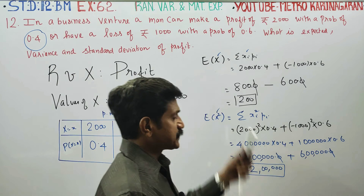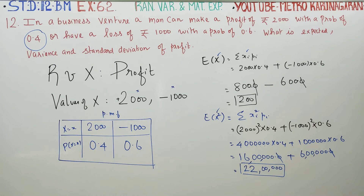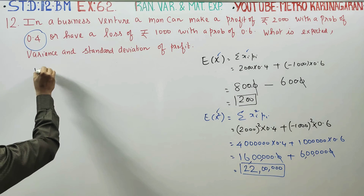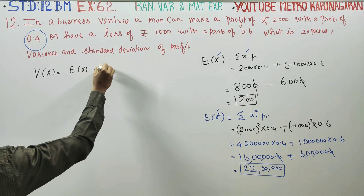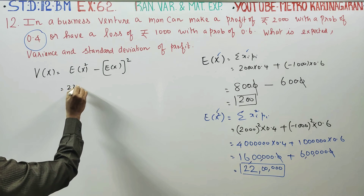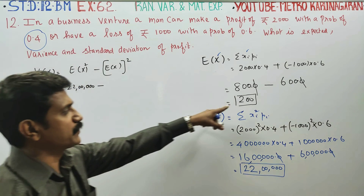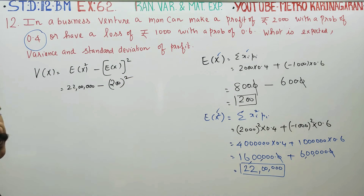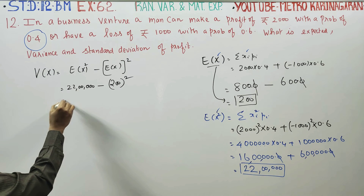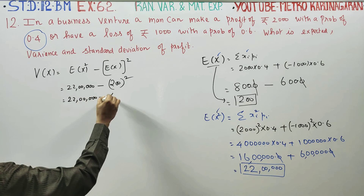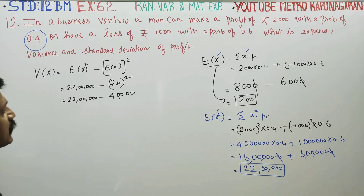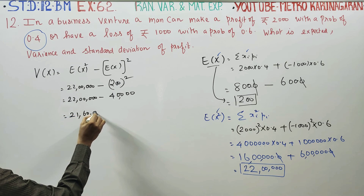Now proceeding to variance. The variance formula is: Variance = E(X²) - [E(X)]². We have E(X²) = 22,00,000 and E(X) = -200, so [E(X)]² = (-200)² = 40,000. Therefore Variance = 22,00,000 - 40,000 = 21,60,000. This is the variance of X.